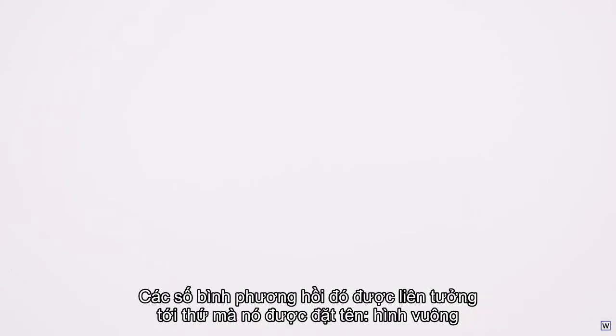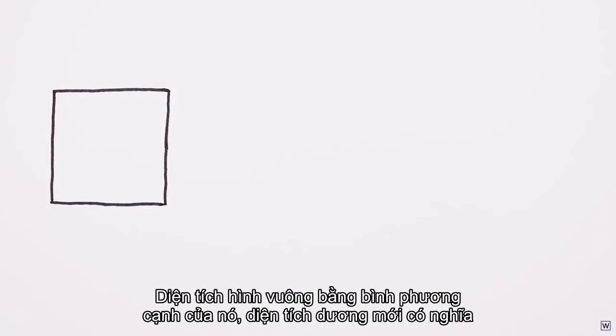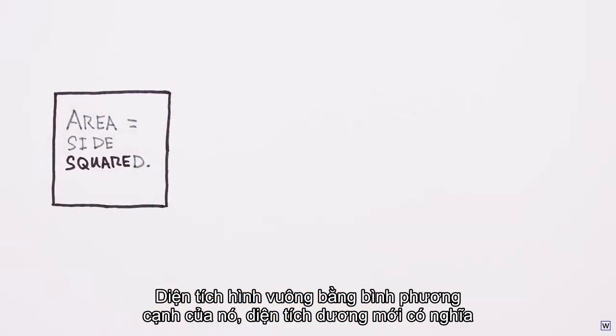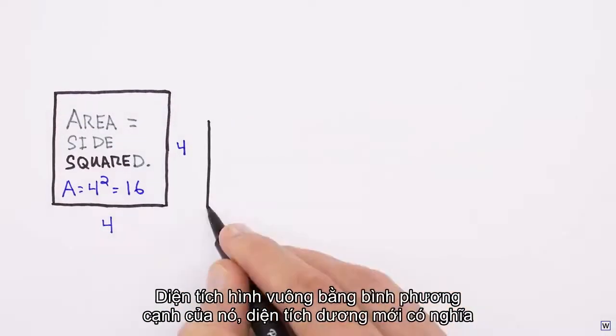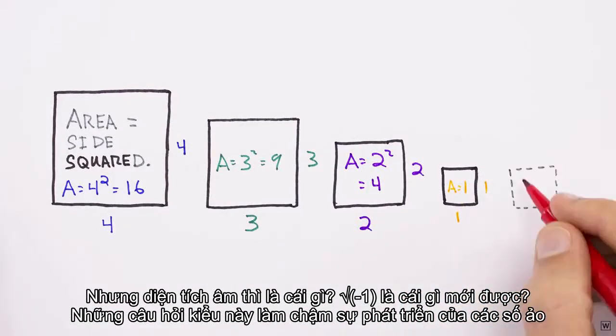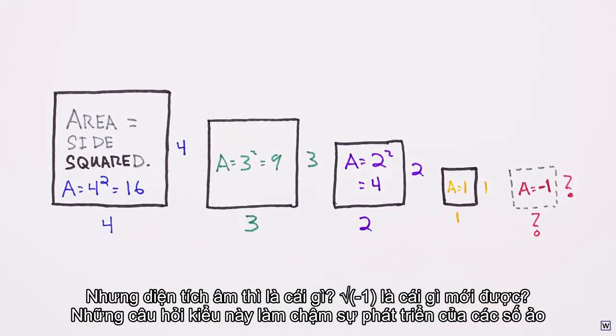Squaring numbers had, up until that point, largely been associated with what the operation is named for, squares. A square's area is equal to the length of its side, squared. So positive areas make sense. But what could a negative area be? What even is the square root of minus one?